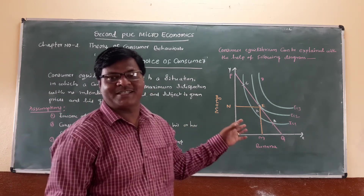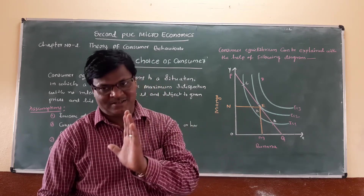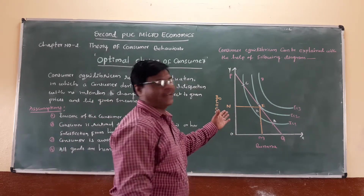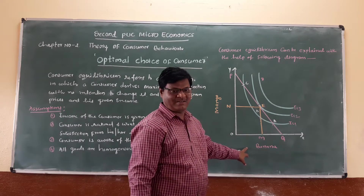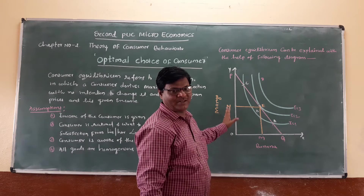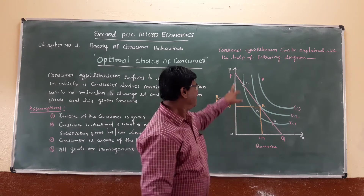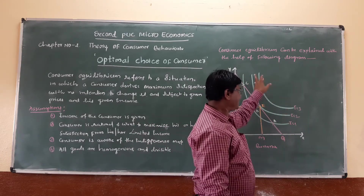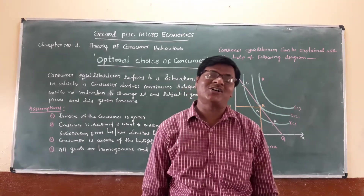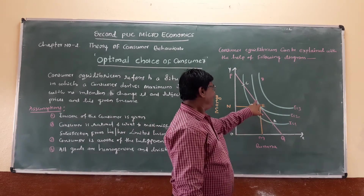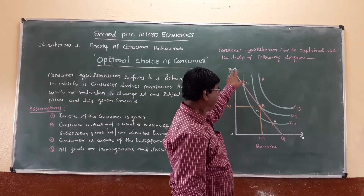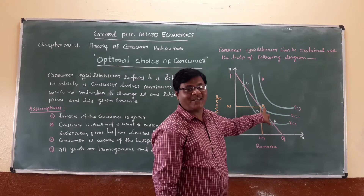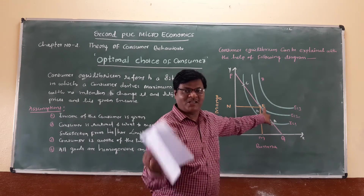In the diagram, the vertical axis measures banana and the horizontal axis measures mango. The goods — mango and banana — are homogenous. PQ is the price line of the consumer, and IC1, IC2, IC3 are the indifference curves. Where the price line meets the indifference curves at point E, point E represents the equilibrium of the consumer.